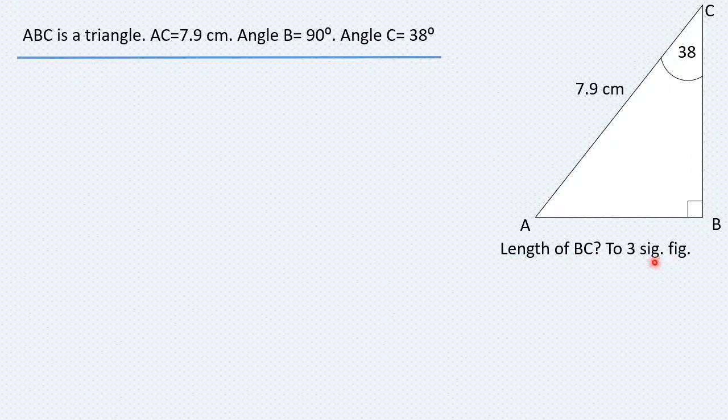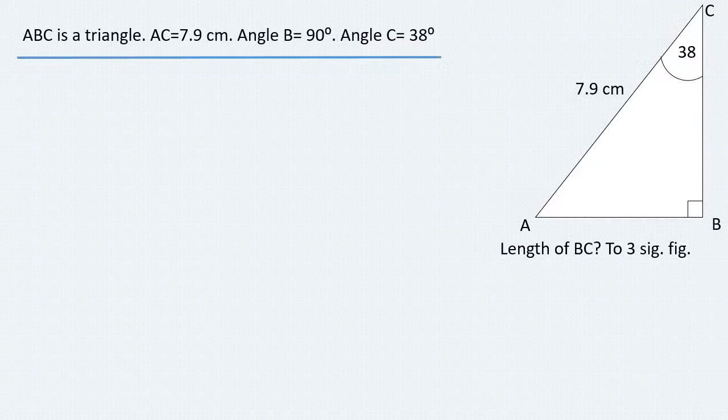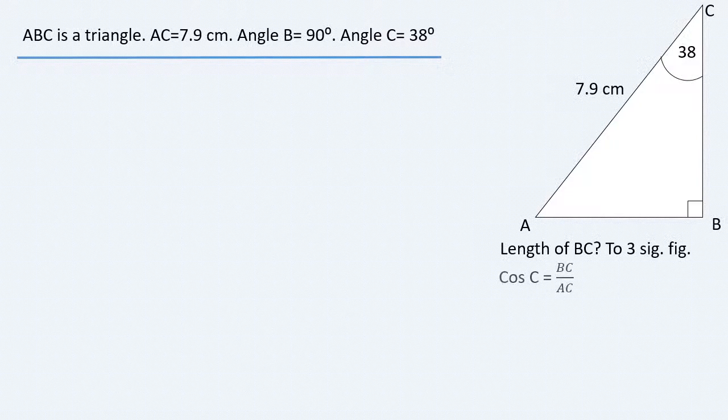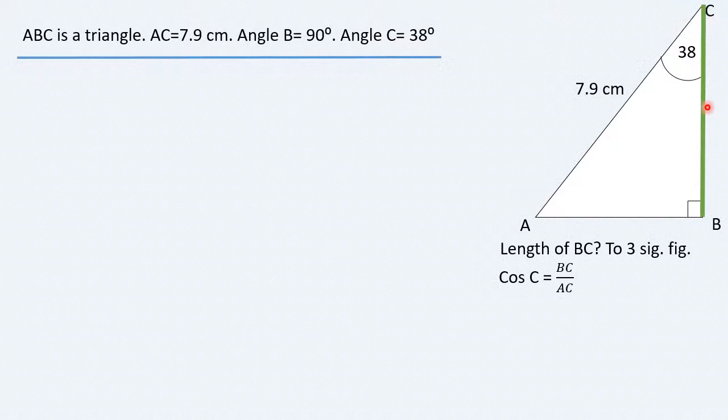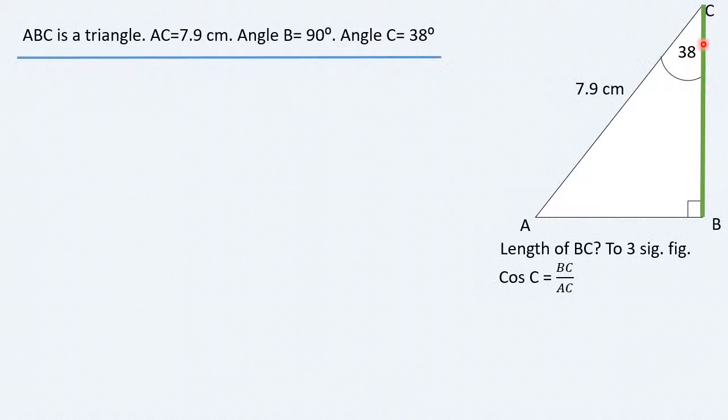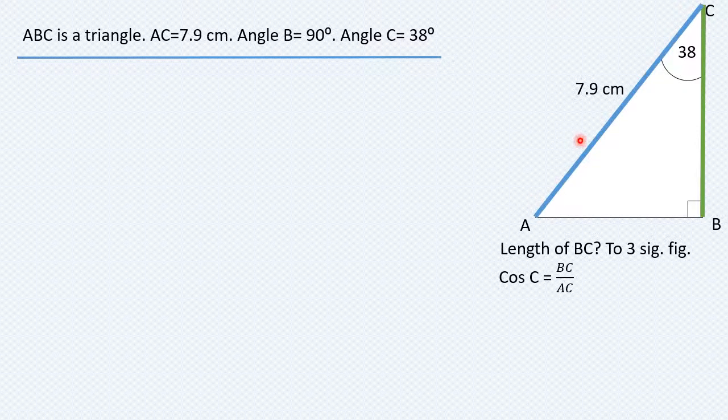This is a straightforward trigonometry question where the cosine of angle C is defined as the adjacent BC, the side adjacent to angle C, divided by the hypotenuse, which is AC. The hypotenuse, of course, is the side opposite to the right angle.